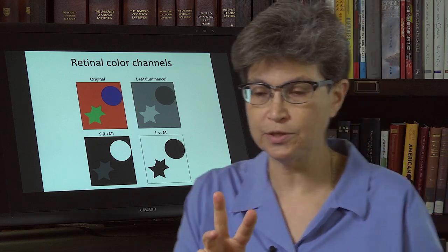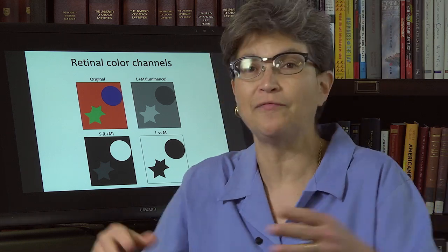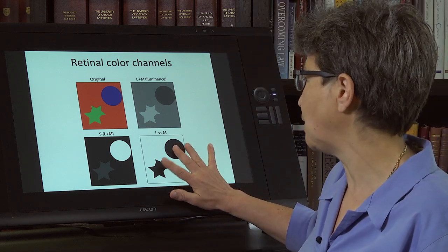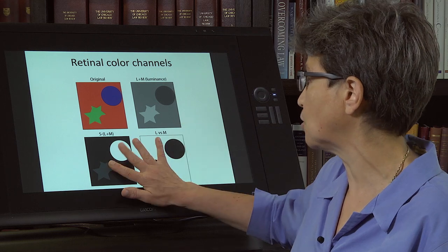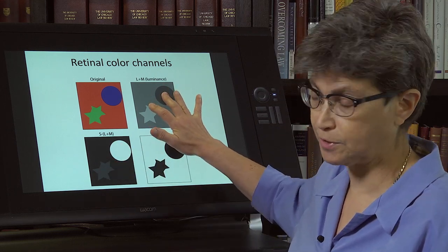So these are all, these opponencies are, there are half the cells are one way and half the cells are the other way. So this is typically talked about as red-green opponency. This is talked about blue-yellow opponency, and this is black-white opponency.